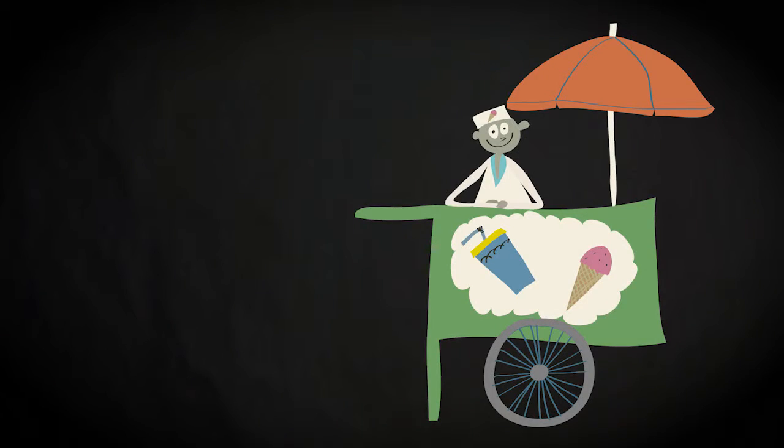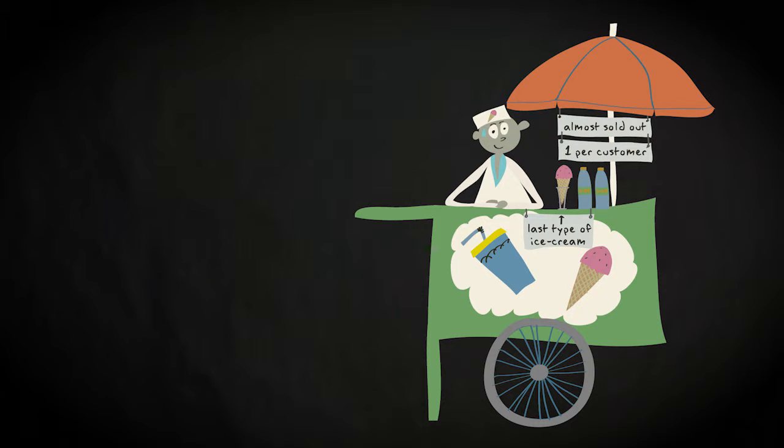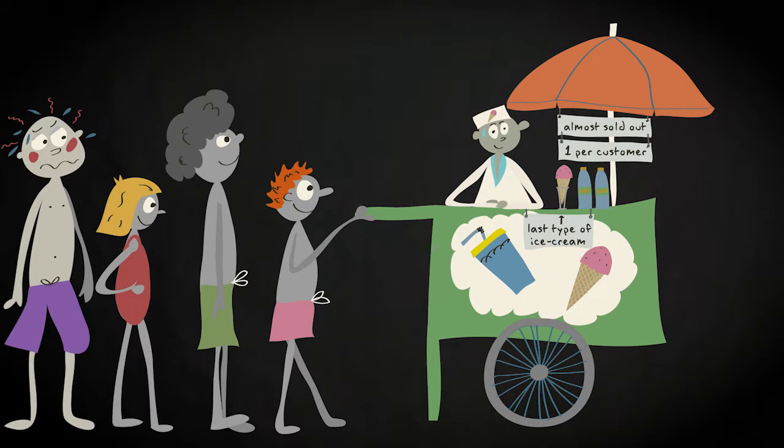You are going to buy a soft drink at the beach stand, which is almost sold out, with ice cream and only two bottles of soft drink left for sale. That's why sales are limited to one item per customer. Unfortunately you find three persons lined up in front of you.